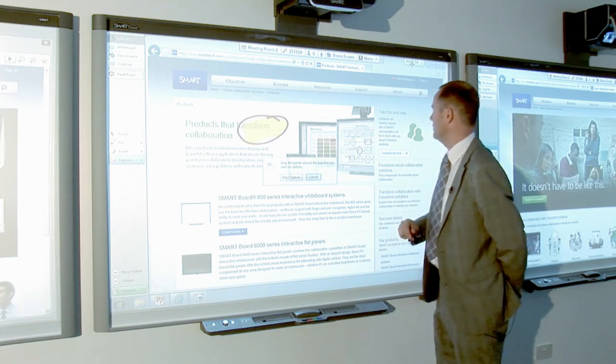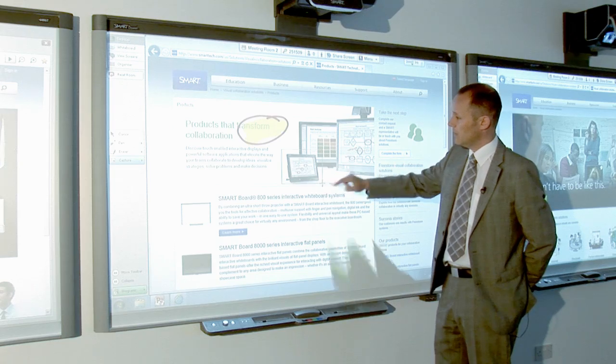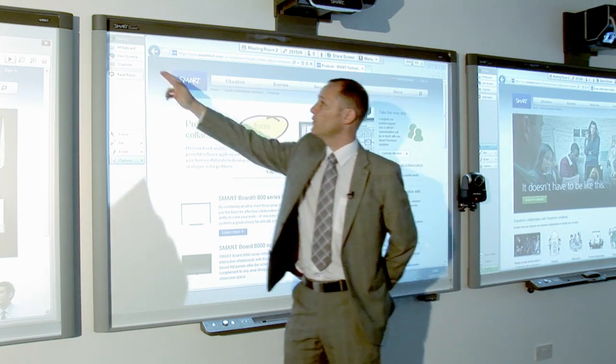and I would like this particular area over here, such as that image there. I can draw around the image. That will capture it to the whiteboard.